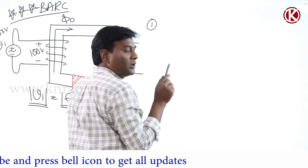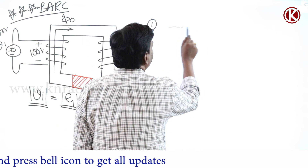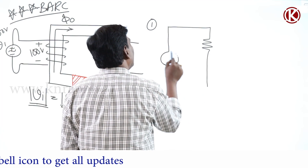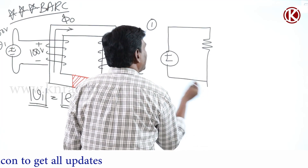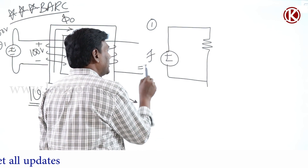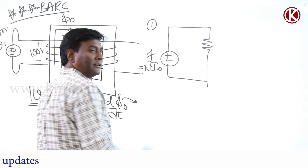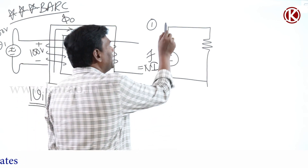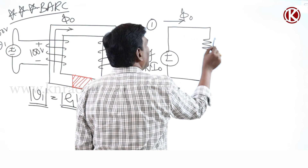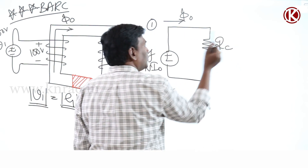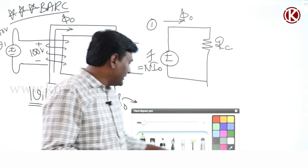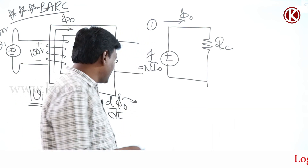If you try to draw the magnetic circuit for the first case (black only): reluctance of core is there, and the MMF — which is number of turns multiplied by no-load current — gives you the operating flux Φ₀. This is the reluctance of the core.